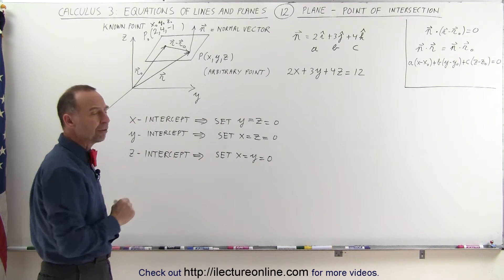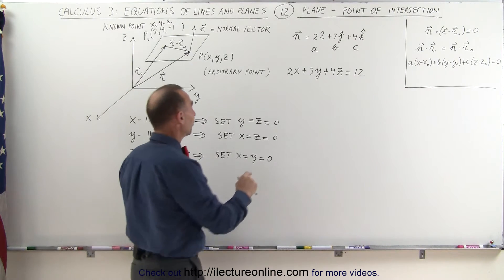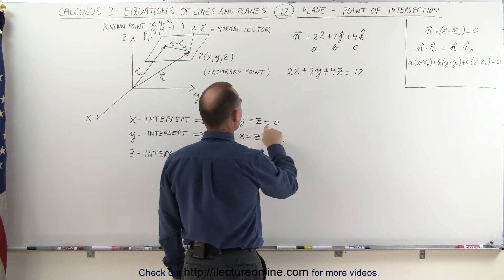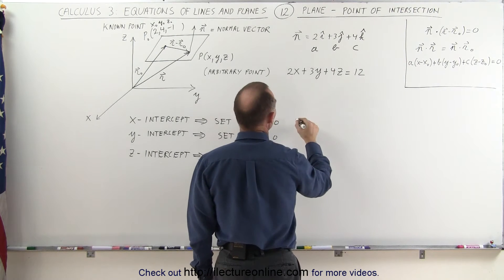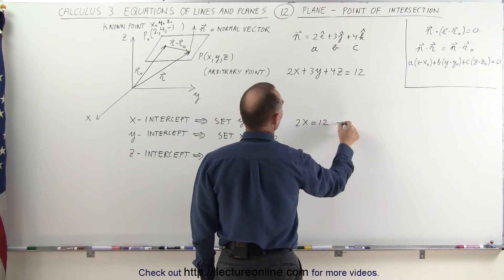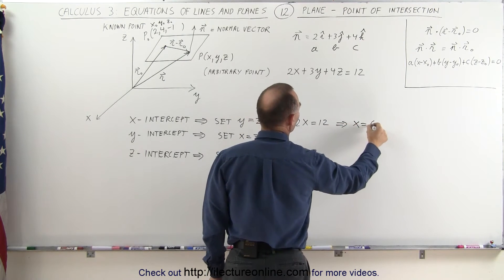Let's go ahead and do that for each of those three intercepts. First we'll set y equal to z equal to zero. If y and z equal zero, we end up with 2x equals twelve, which means that x equals six.